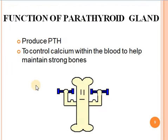Functions of the parathyroid gland. The parathyroid glands produce parathormone, which regulates the amount and content of calcium in the blood. It also helps to maintain strong bones.